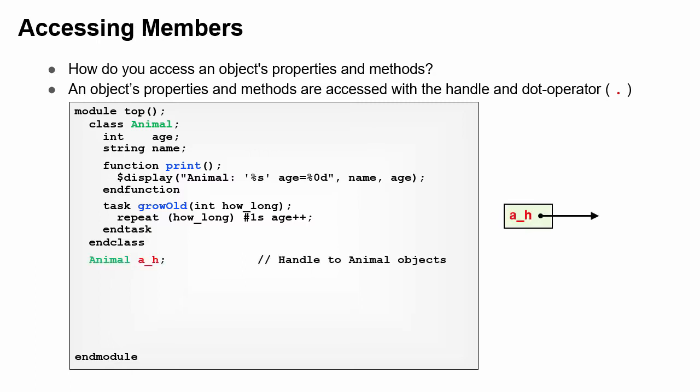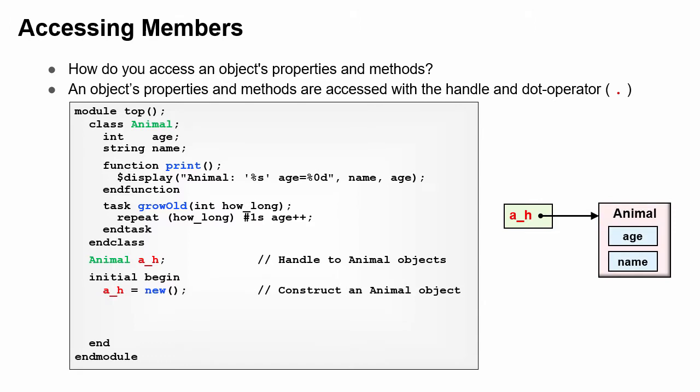First, declare the handle a of type animal. Construct the object. Now assign a value to the name property in the object.